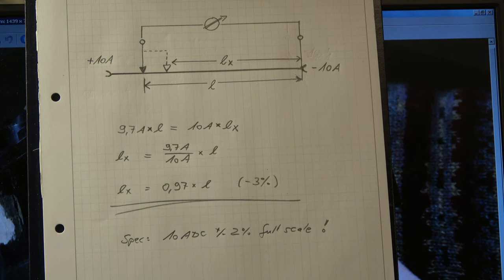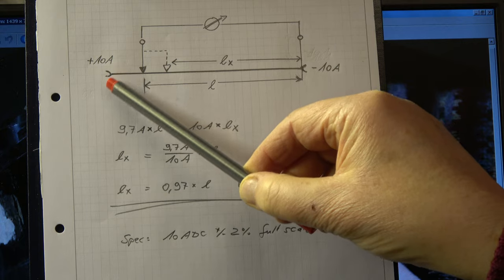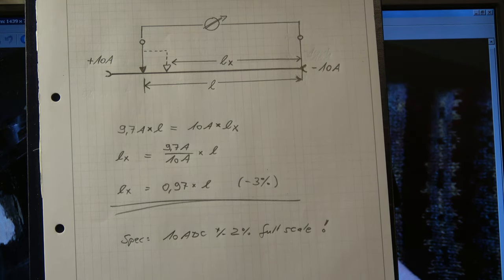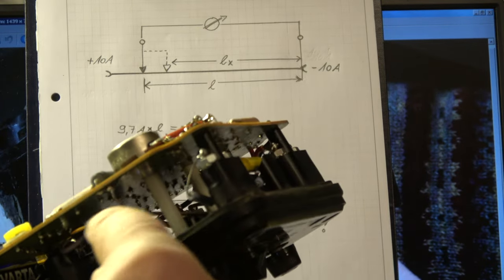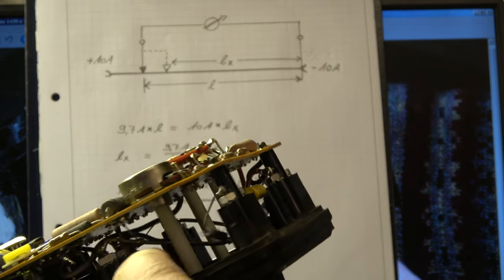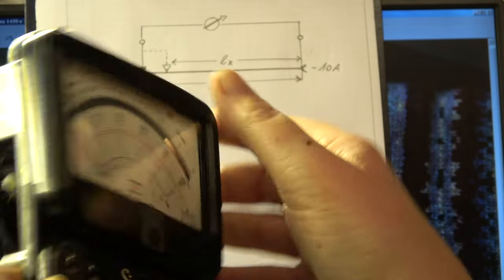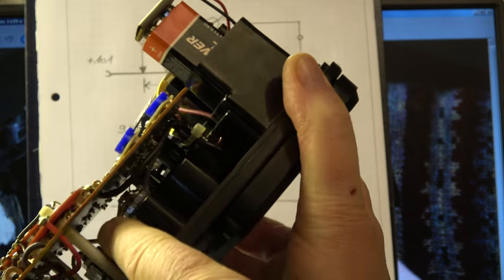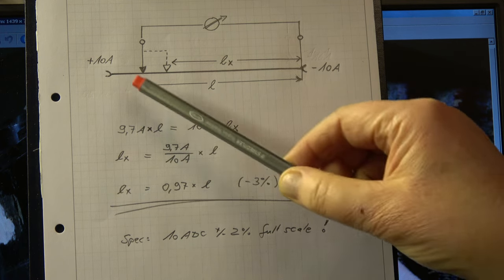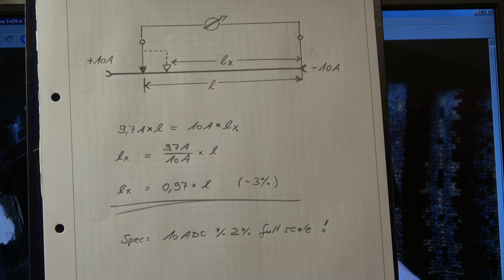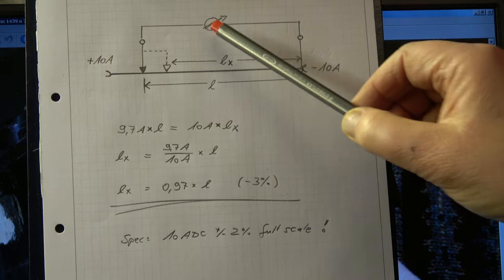How does the 10 amp measurement work? We have two connectors, plus 10 amp, minus 10 amp. This is a shunt resistor, it's a long wire. We can see it here, part of it. Here it starts, here we can see the wire and on the other side the wire comes back to the minus one, the minus pole here. This wire has a specific resistance, the length is L.